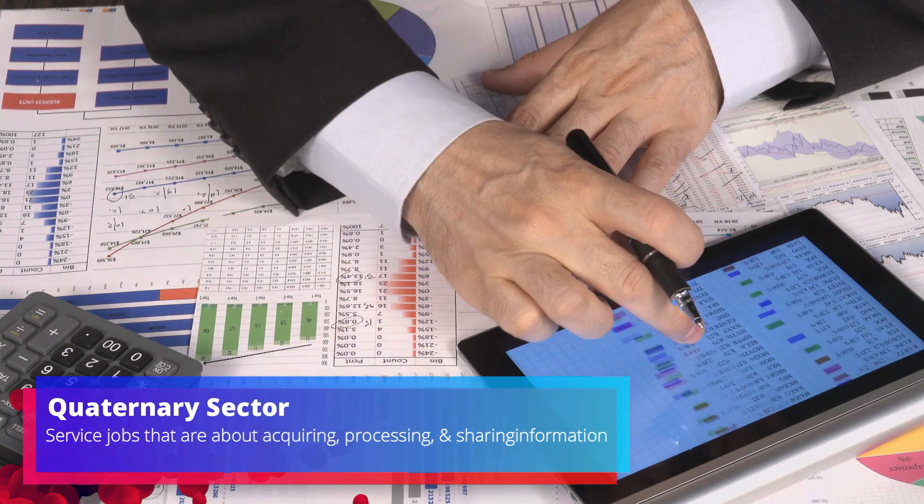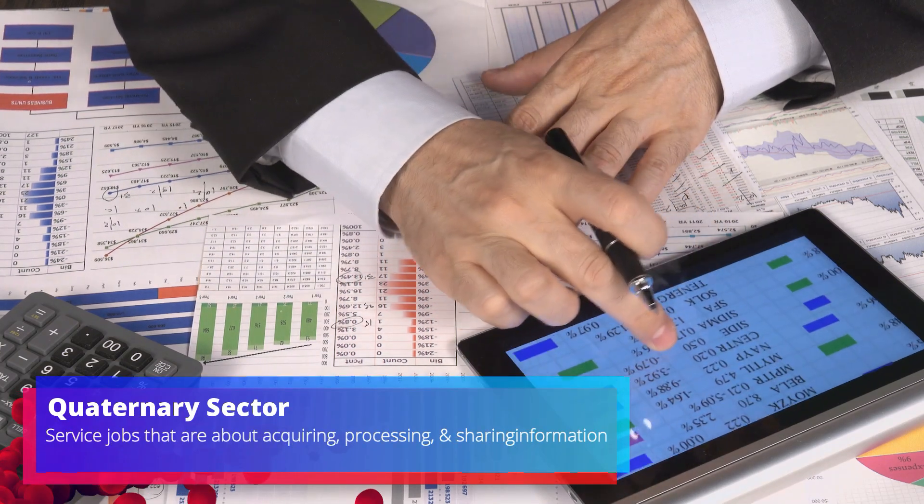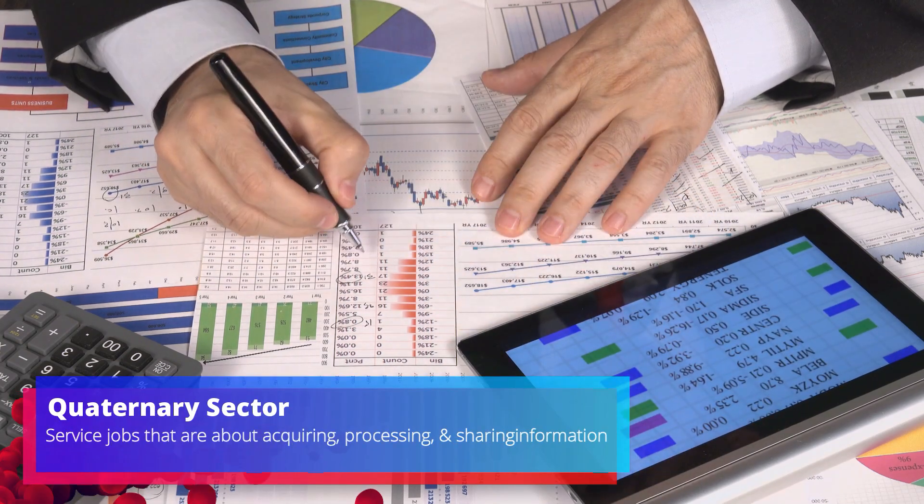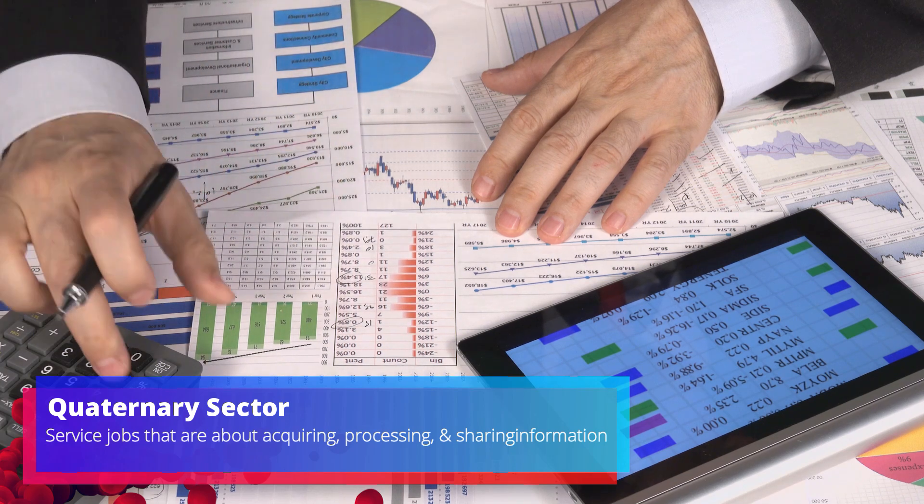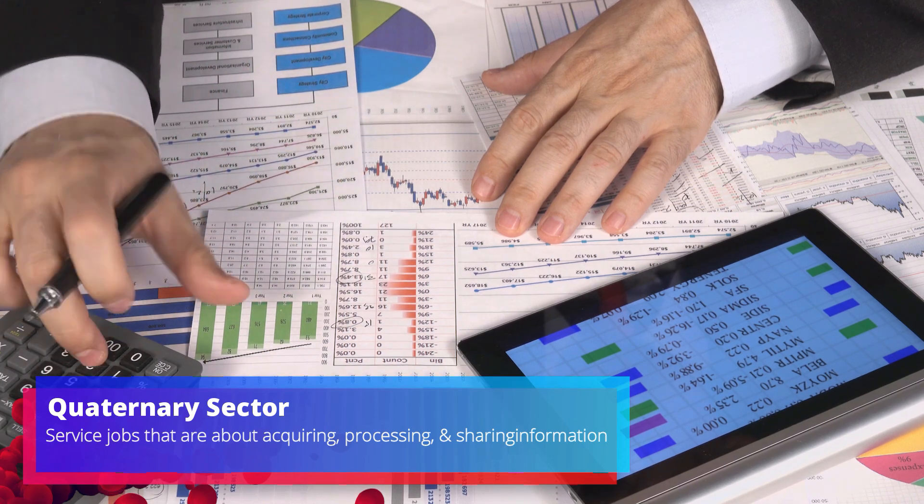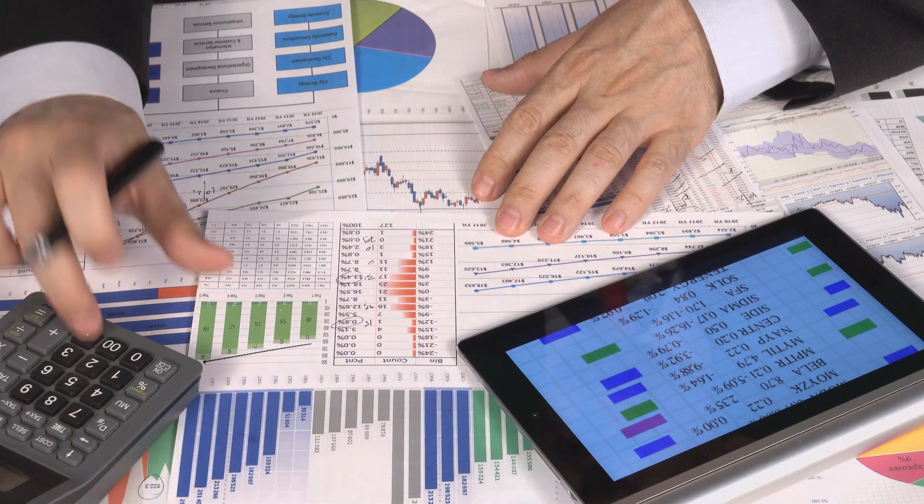And eventually, the tertiary sector can be broken up into two other categories. We can look at the quaternary sector and also the quinary sector. The quaternary sector is about acquiring, processing, and sharing information. Examples of activities in this sector include journalism, people in finance, insurance, real estate, or other industries that focus on information collecting and processing.